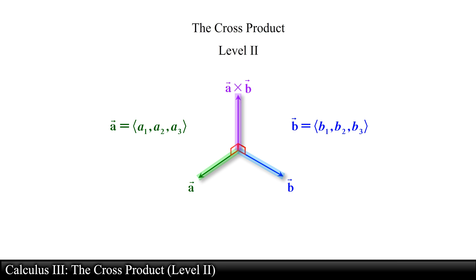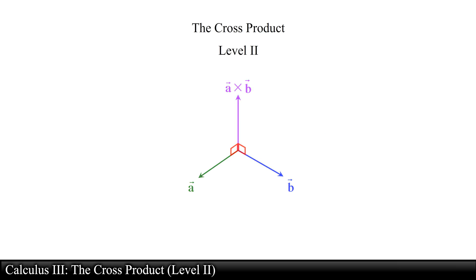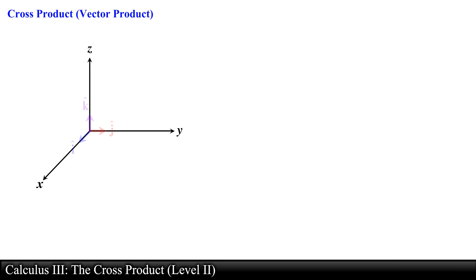We can calculate the cross product A cross B directly if we know the x, y, and z components of vector A and vector B. We can calculate the components of the cross product using a procedure similar to that for the dot product. Let's first determine the cross products of the unit vectors i hat, j hat, and k hat.